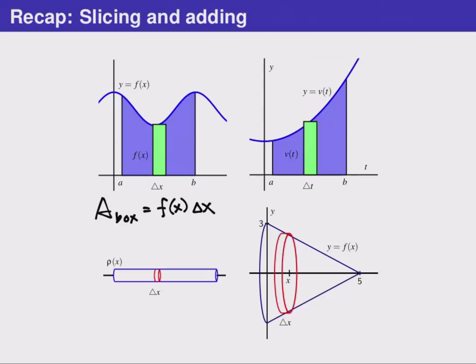In a very similar way, we looked at the net distance traveled by an object with a given velocity, such as in the top right. Plotting the velocity curve, we sliced the area under it into very thin slices, each of width, which had a thin width, we call delta t, representing time, and a height v representing velocity.